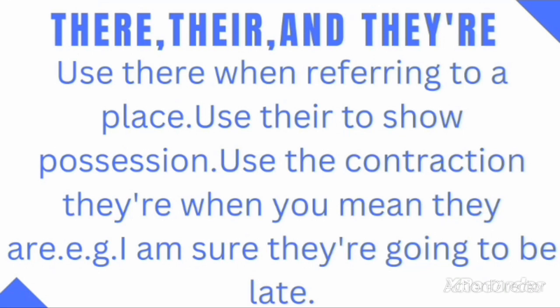Finally, let's look at how we can make use of there, they're, and their. Use there when referring to a place. Use their to show possession. Use the contraction they're when you mean they are. For example, I am sure they're going to be late.